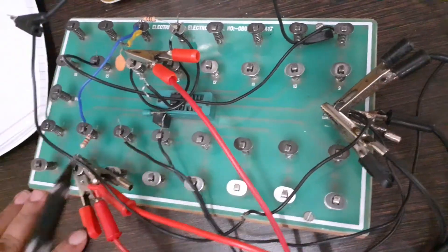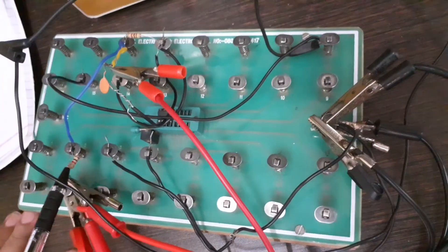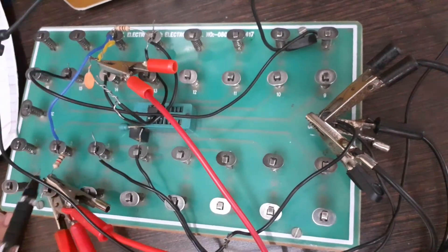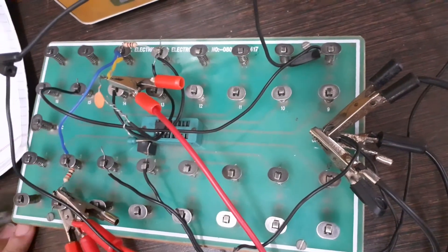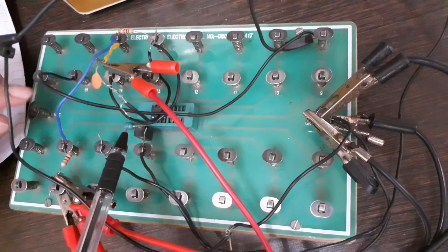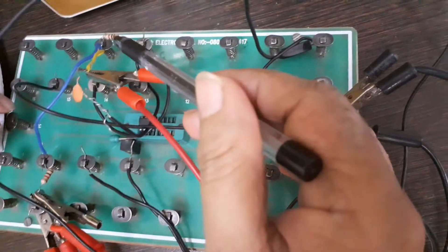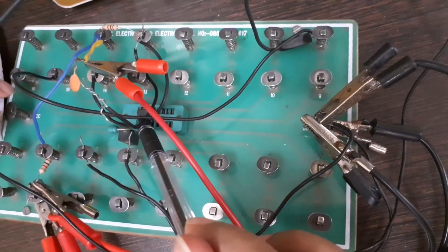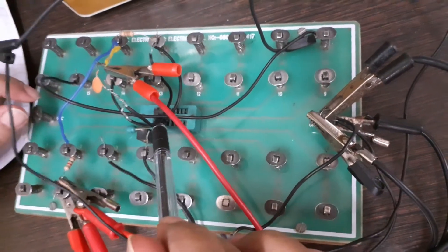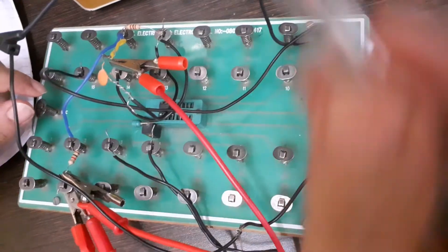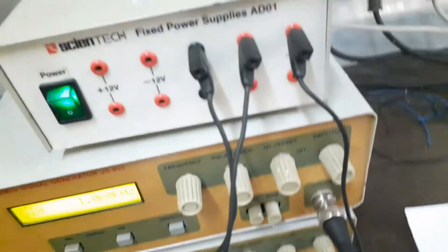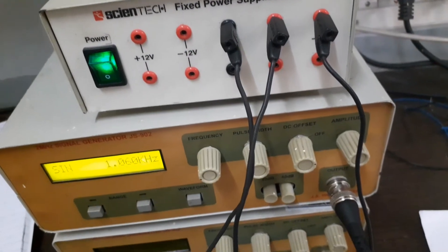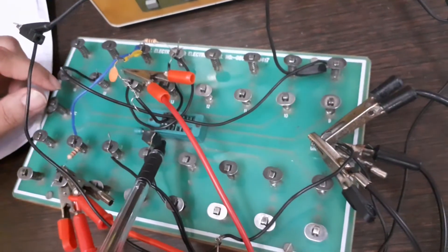See the connections here: we have connected R1 for V input, then the capacitor and R2 has been connected in series and it has been shorted to pin number 2, the non-inverting terminal. Then we have connected plus 5 volt and minus 5 volt to the 7th pin and the 4th pin.